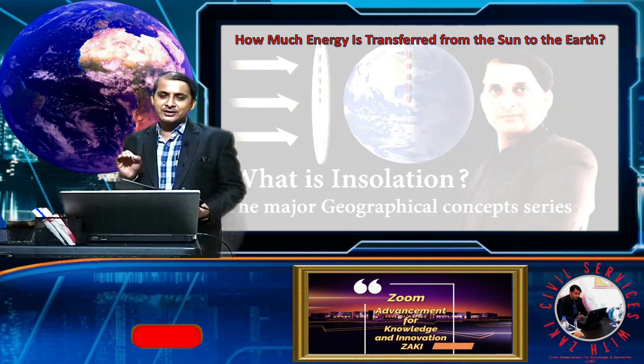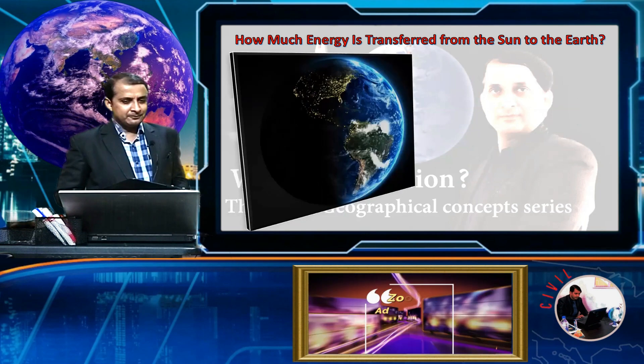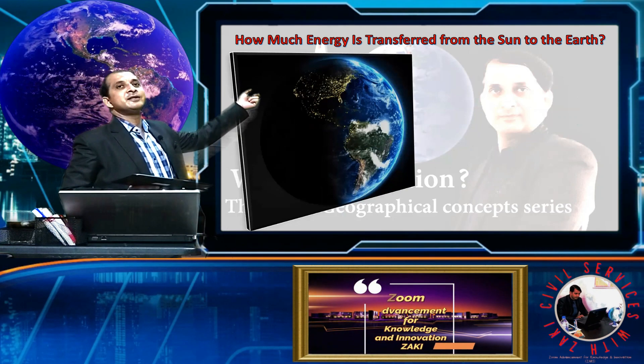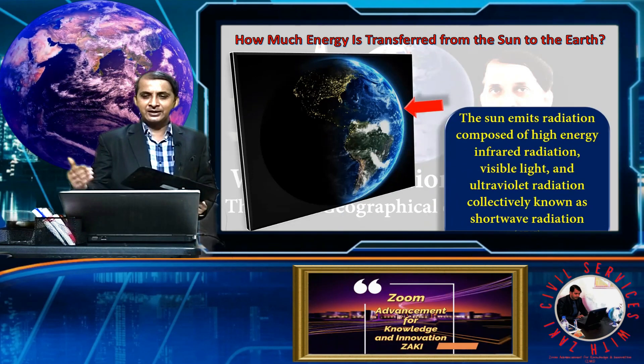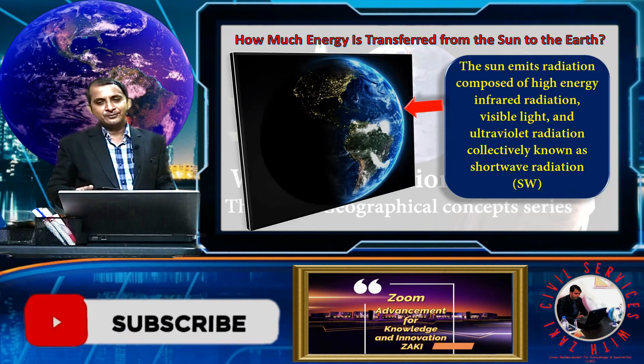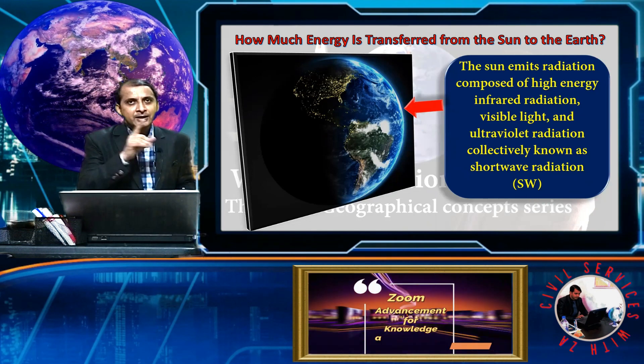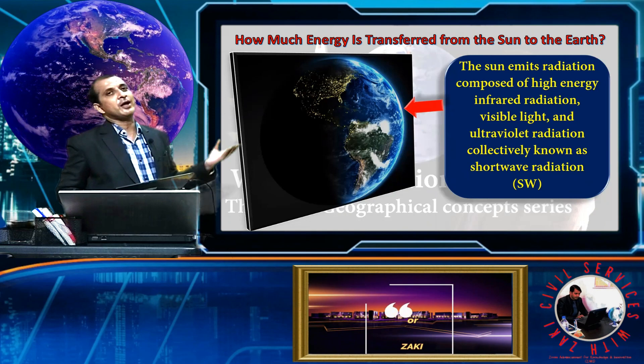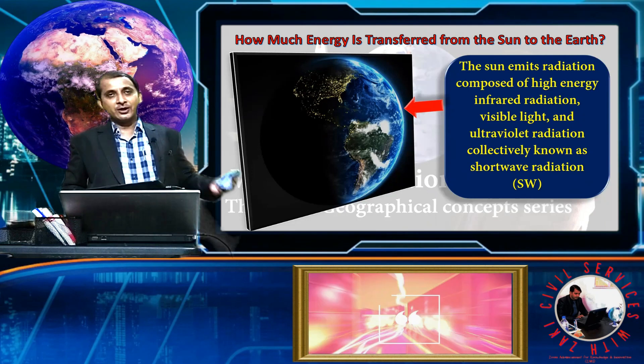How much energy is transformed from Sun to Earth? If you see here, this is our Earth - one side is dark and another side is light. The Sun emits radiation composed of high energy infrared radiation, visible light, and ultraviolet radiation. These are collectively known as short wave radiation. The radiation coming from the Sun is called short wave radiation.